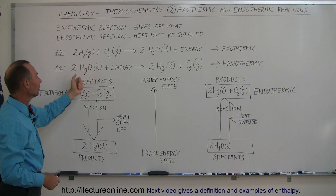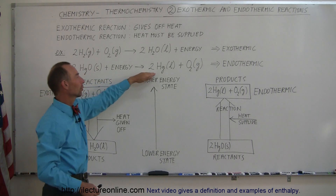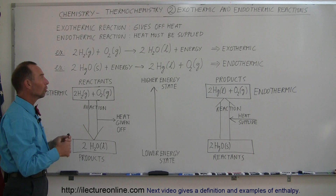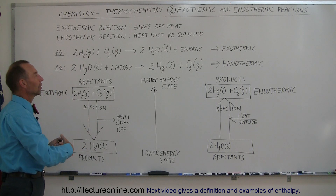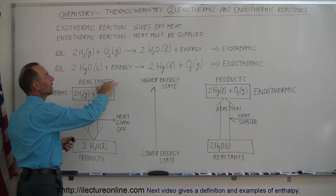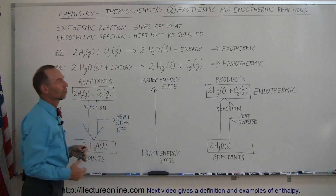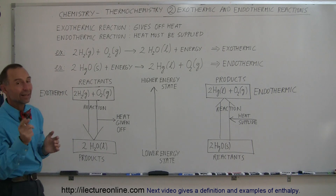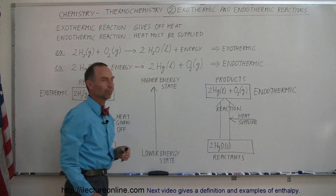The next reaction: we have mercury oxide, which is a solid. In order to turn that into mercury and oxygen gas, it will not do that on its own — you have to supply heat. When you heat it up to high temperatures, it will dissociate into mercury liquid and oxygen gas. So it requires heat, and therefore we call it an endothermic reaction.